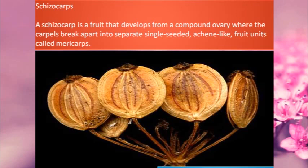Schizocarp is a fruit that develops from a compound ovary, where the carpels break apart into separate single-seeded achene-like fruit units which are called mericarps. The simplest schizocarp has two mericarps, meaning two fruit units.